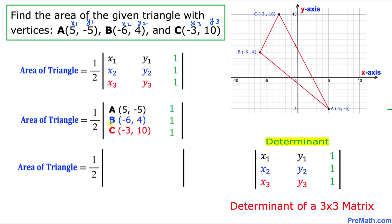So I can write this determinant as these points: 5, negative 5, negative 6, 4, negative 3, 10, and this on the right-hand side column are simply ones.